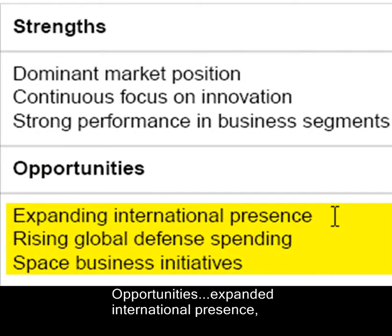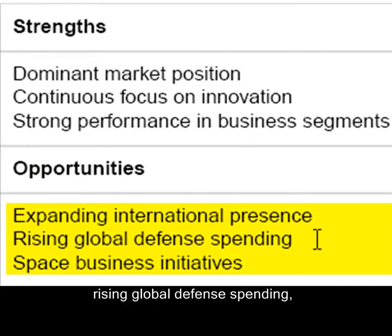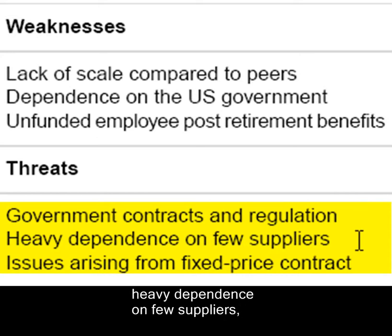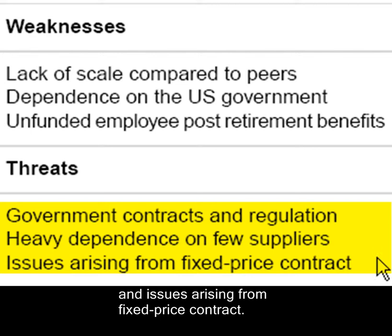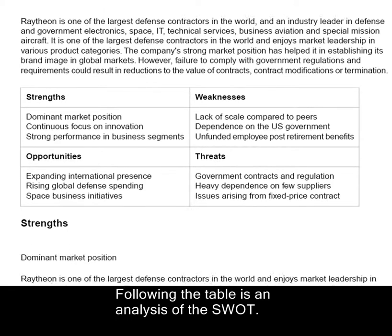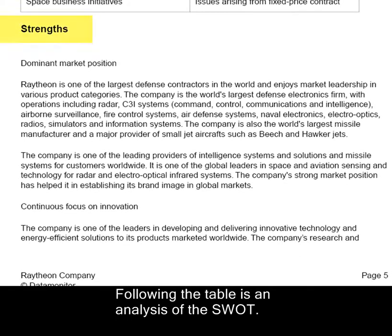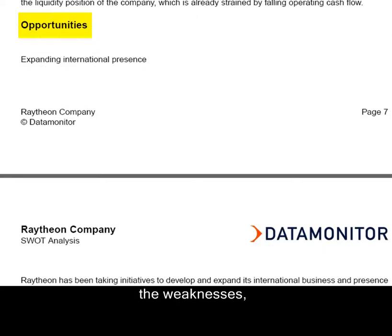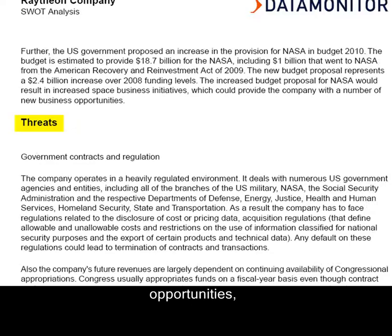Opportunities include expanded international presence, rising global defense spending, and space business initiatives. Threats include government contracts and regulation, heavy dependence on few suppliers, and issues arising from fixed price contracts. Following the table is an analysis of the SWOT, covering the strengths, weaknesses, opportunities, and threats.